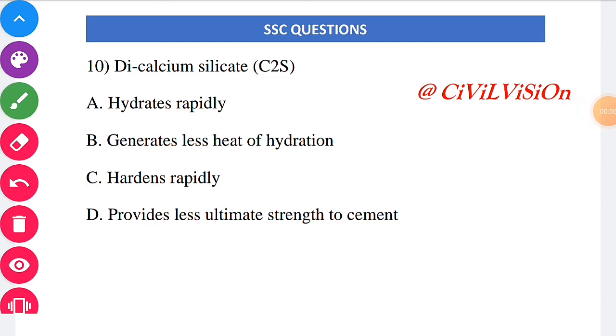Tenth question: Di-calcium silicate (C2S). There are a lot of advantages over di-calcium silicate. C2S requires 21% of water by its weight. C2S develops the lowest heat of hydration. C2S develops slow rate of gain of strength. C2S develops strength after 7 days of hydration, and also it provides the ultimate strength of cement. Therefore, the correct answer for this question is option B: generates less heat of hydration.